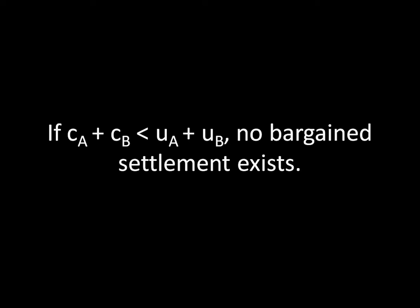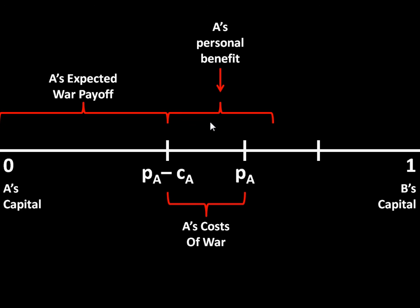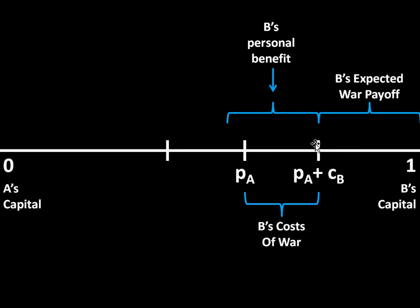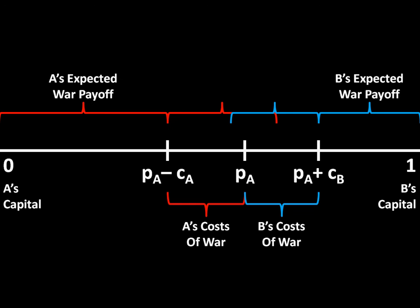On the other hand, if the sum costs of war are less than the sum benefits of war, no bargaining range settlement exists. If A's personal benefit is now greater than its state costs, A needs to receive a very large amount in order to be willing to settle. And if B is also getting a personal benefit from war greater than its costs of fighting, B needs to receive a large amount too. Those combined demands exceed a total of 1 — how much the states have to negotiate over — so there is no bargaining range and they can't settle peacefully.